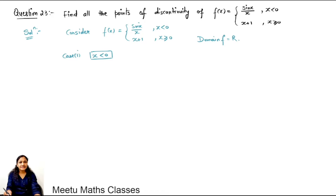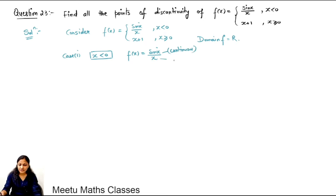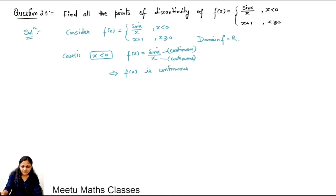When x is less than 0, the function is defined as sin x upon x. Now sin x is a continuous function and x, being a polynomial function, is also continuous. So the quotient of two continuous functions is also a continuous function. Therefore f(x) is continuous for all x less than 0.